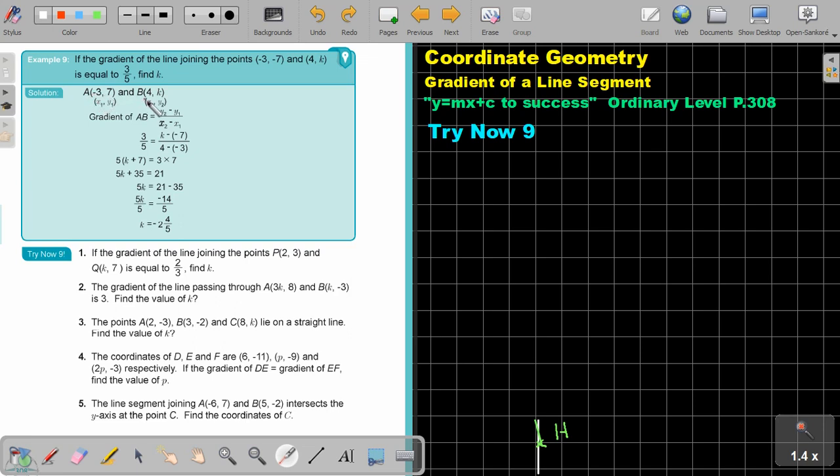Again, write down your two points, mark your points, this is 1, this is 2, write down the formula for the gradient and then do substitution.